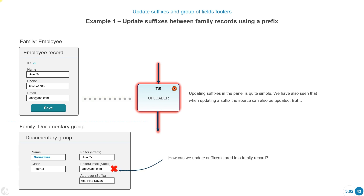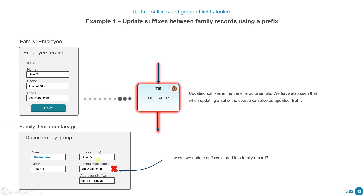But how can we update suffixes that are stored in a family record? We already know how to update information from a source record to a panel or from a panel to the source record — that's straightforward. But when we have a record with a prefix and that record also contains suffixes of that prefix, this requires a different operation.